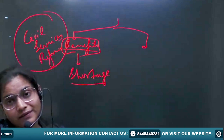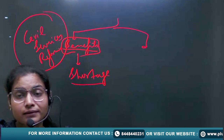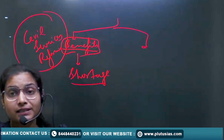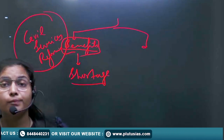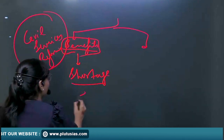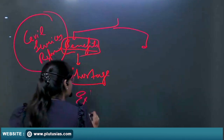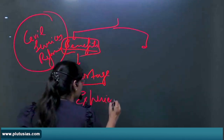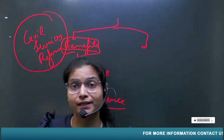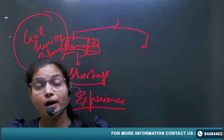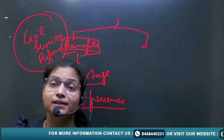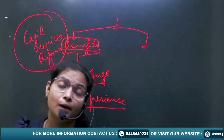Benefits could include: there is a shortage of civil servants, and lateral entry can help fill that shortage at higher positions from the private sector. Moreover, the private sector brings expertise and experience. In GS4 Ethics, you read about private sector work ethics — there is more efficiency and competitive skills in the private sector.